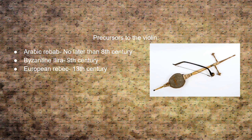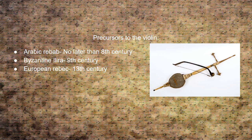This led to the Byzantine Illyra in the 9th century, and eventually the European Rebek in the 13th century. As they developed the instrument, they began to add a body. The European Rebek had a really big, almost box-like body that was hollow on the inside, used to amplify the sound. The sound waves go into it, they amplify, and they come back out. The rabab, which has no body, would sound pretty soft. The European Rebek had a body, but it was very square, so it didn't amplify as well as it could.